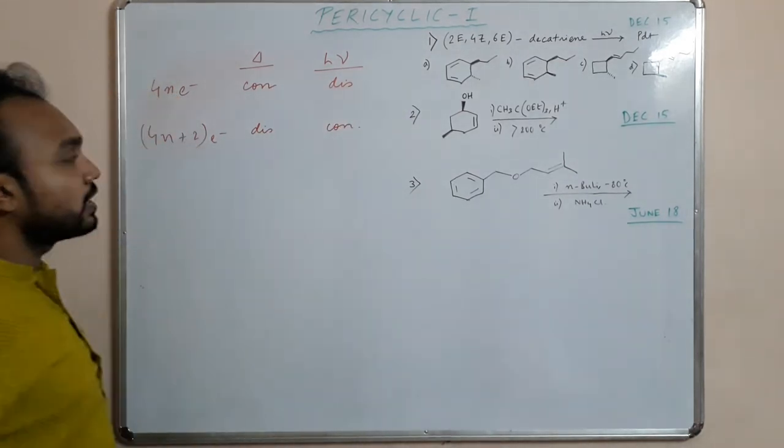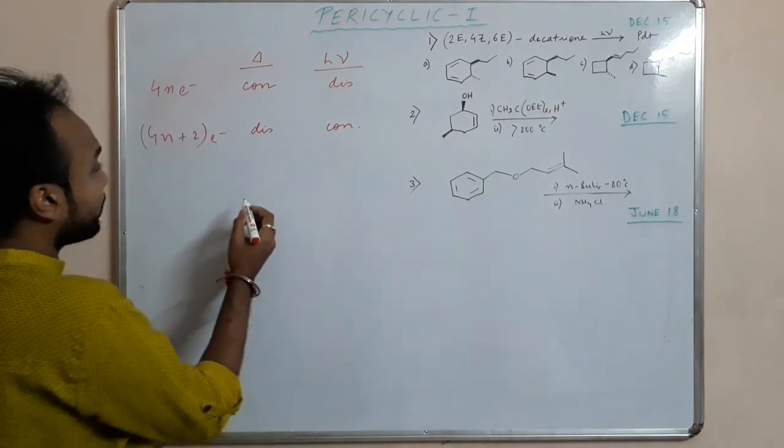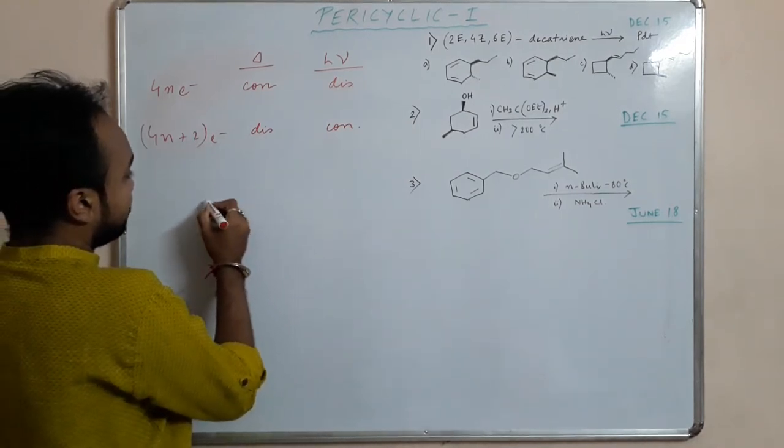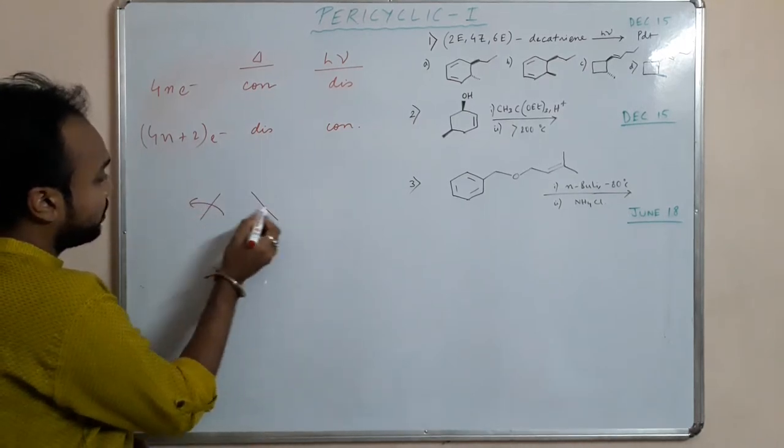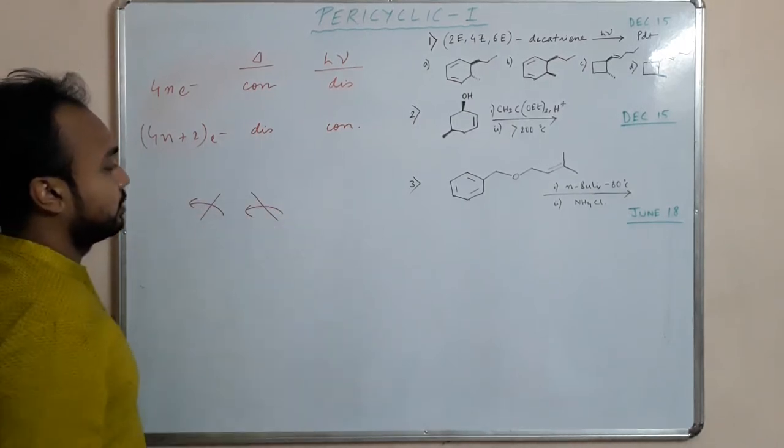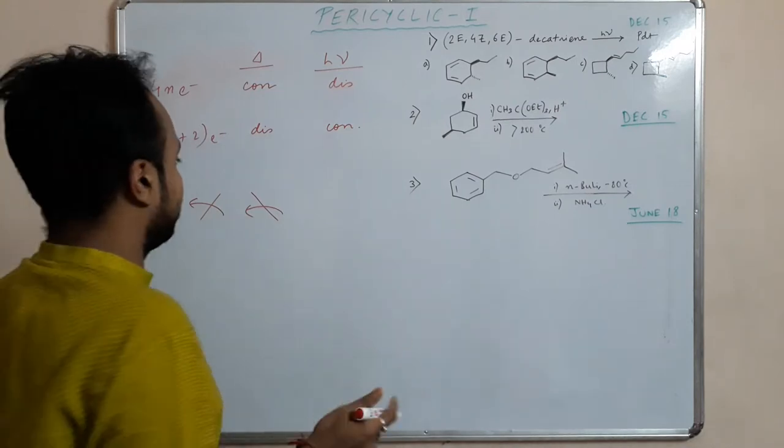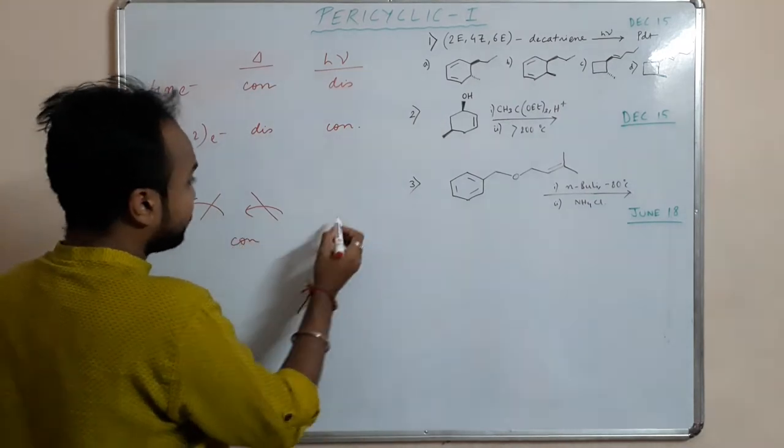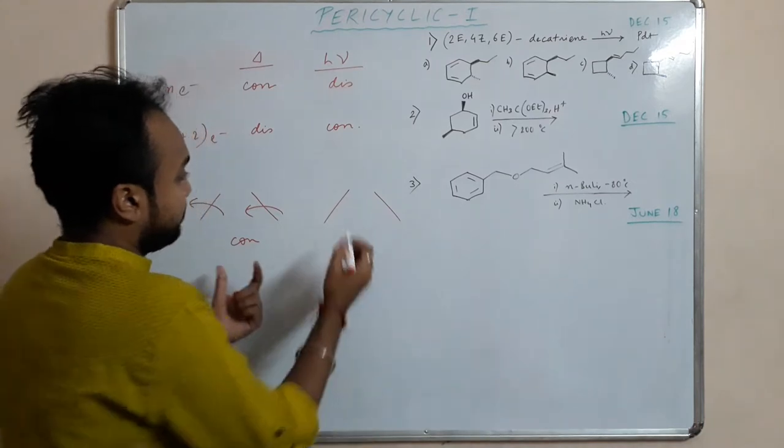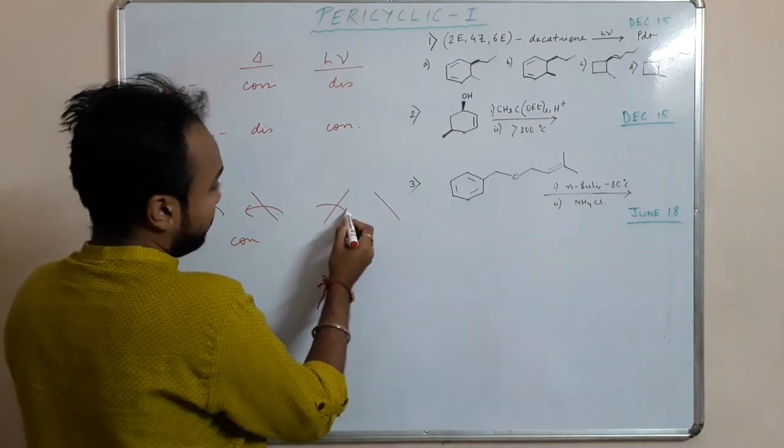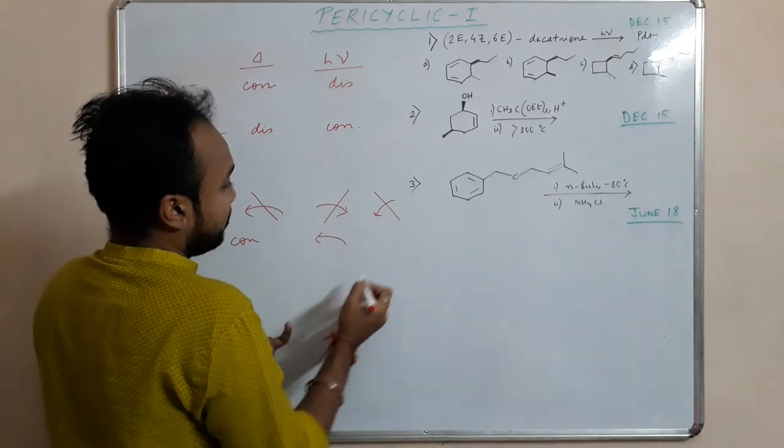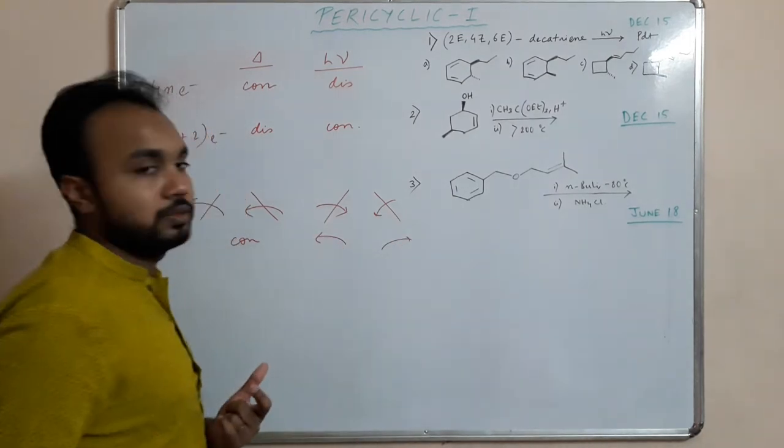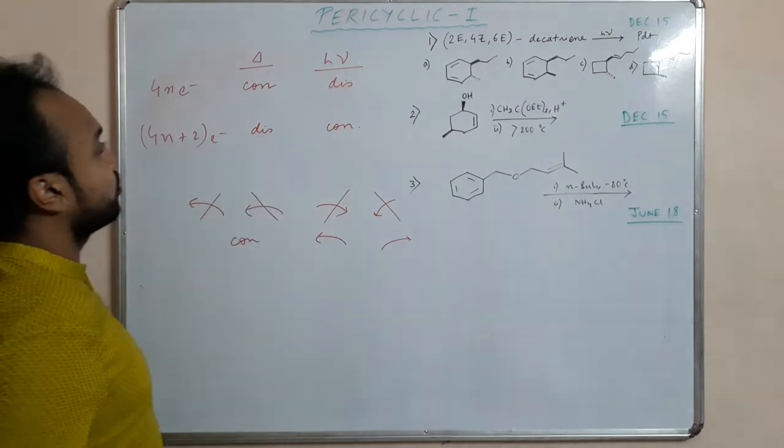What is conrotation and what is disrotation? Conrotation means rotation will be the same direction, either clockwise or anticlockwise. But in disrotation, the rotation will be one clockwise, one anticlockwise.